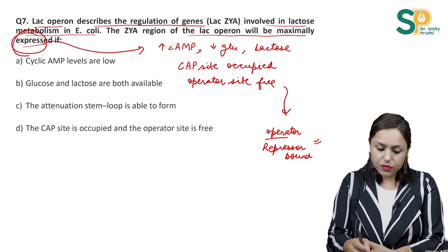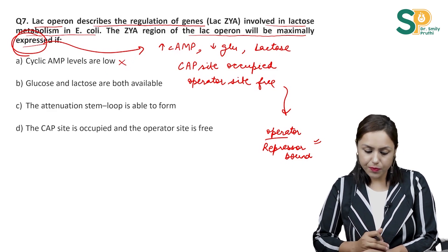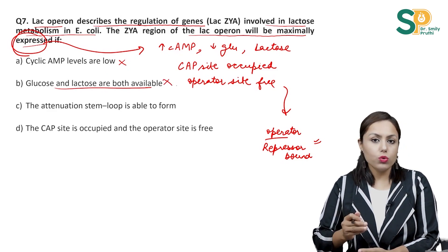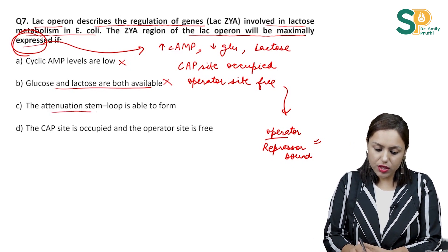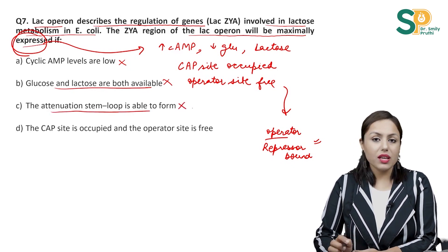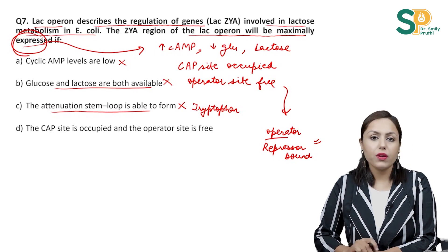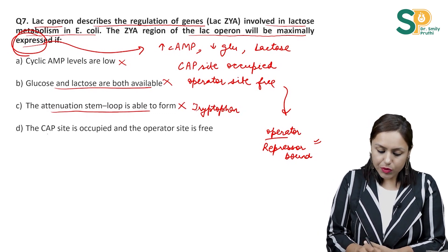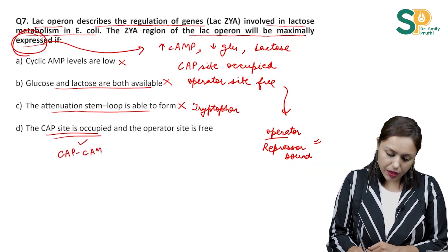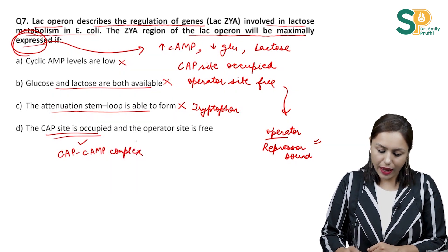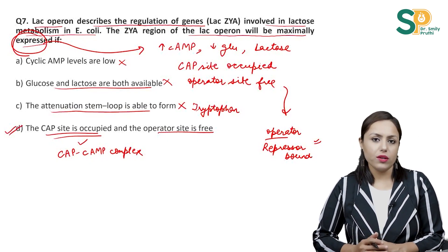Reading the options: Cyclic AMP levels are low — no, cyclic AMP must be raised. Glucose and lactose are both available — no, glucose should be absent and lactose present. Attenuation stem loop is able to form — this applies to tryptophan operon, not lac operon. Option D says CAP site is occupied by CAP-cyclic AMP complex and the operator site is free of repressor protein — yes. So the answer is D.